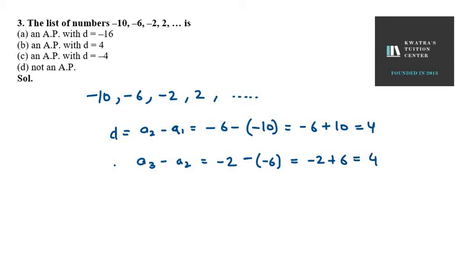Now let's check the last two terms. So it is A₄ minus A₃. A₄ is 2 minus -2. So it is 2 plus 2 and we have 2 plus 2 as 4.